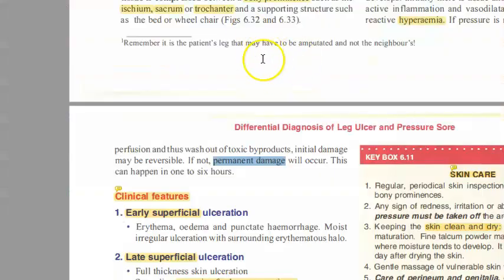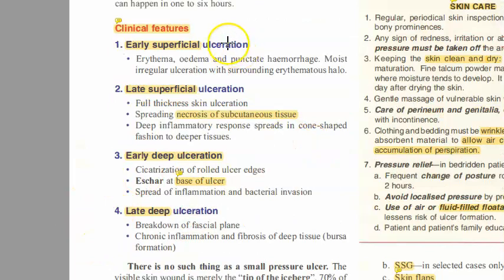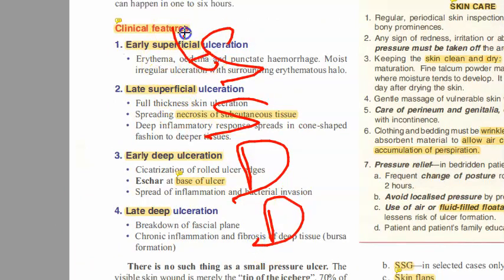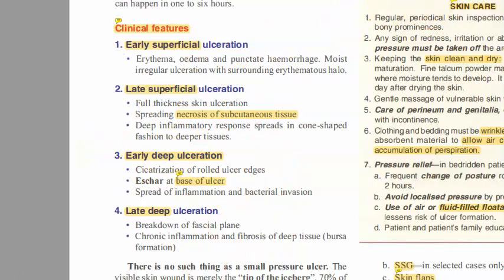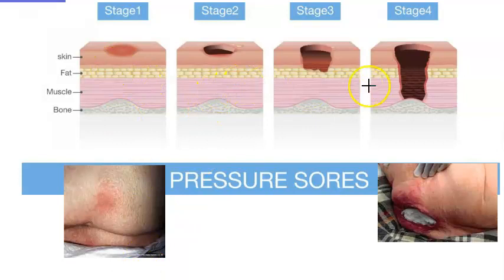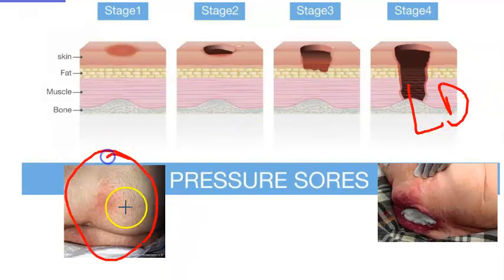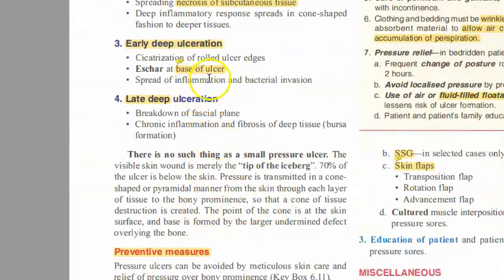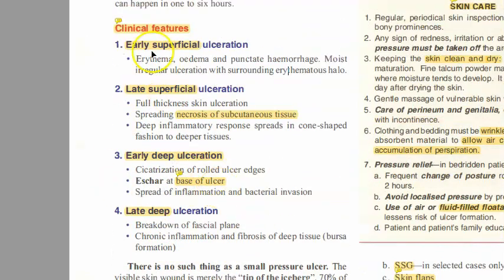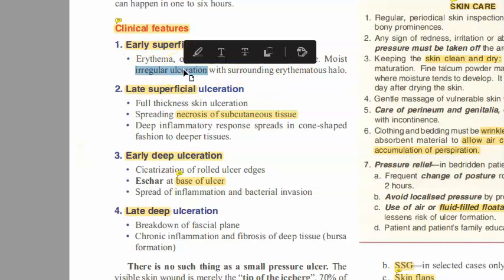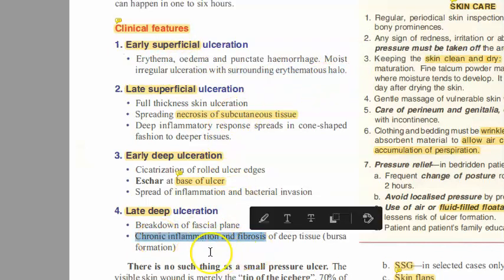Clinically, pressure sores are classified into four types: early superficial, late superficial, early deep, and late deep. Early superficial shows erythema, punctate hemorrhage, edema, and moist irregular ulceration with surrounding erythema as a halo. In early deep ulceration, there can be eschar at the base. Late deep ulceration shows chronic inflammation, fibrosis of deep tissue, and bursa formation. The condition is usually painless.